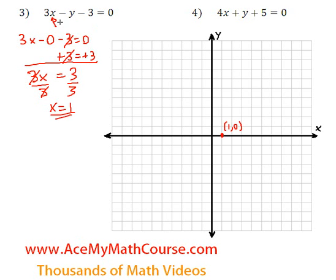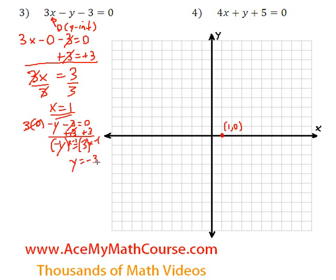So now x is 0 for the y-intercept. So 3 times 0 minus y minus 3 is 0. 3 times 0 is just 0. Now I can add 3 to both sides of the equation. Then negative y will be equal to 3. Let's multiply both sides by negative 1. So y is going to be equal to 3 times negative 1, negative 3. How do we get positive y here? Negative y times negative 1.